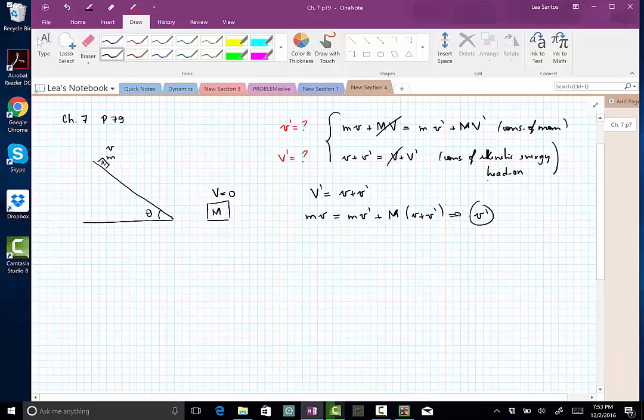So the final speed of the light object. Once we have that, we can then find the speed of the heavy object. So these are the two speeds.